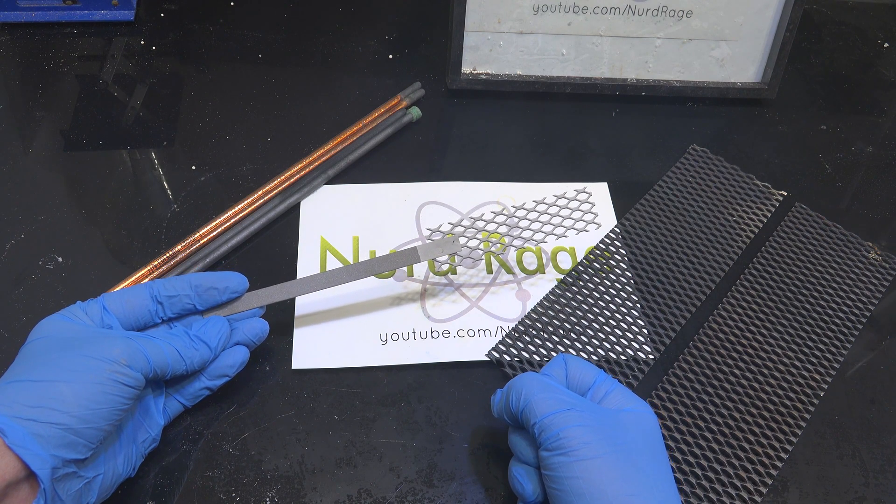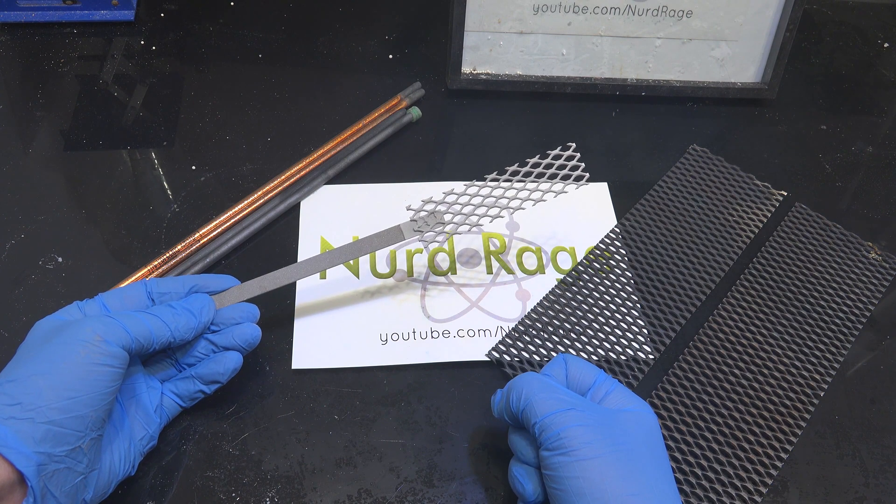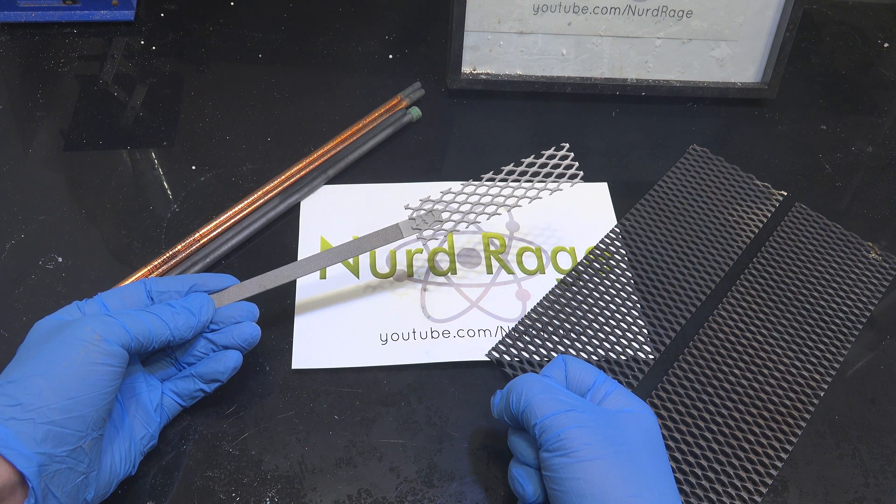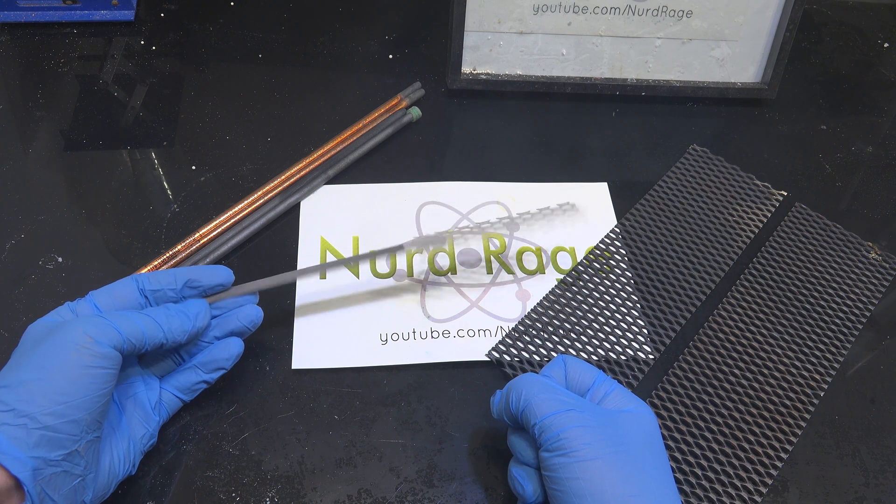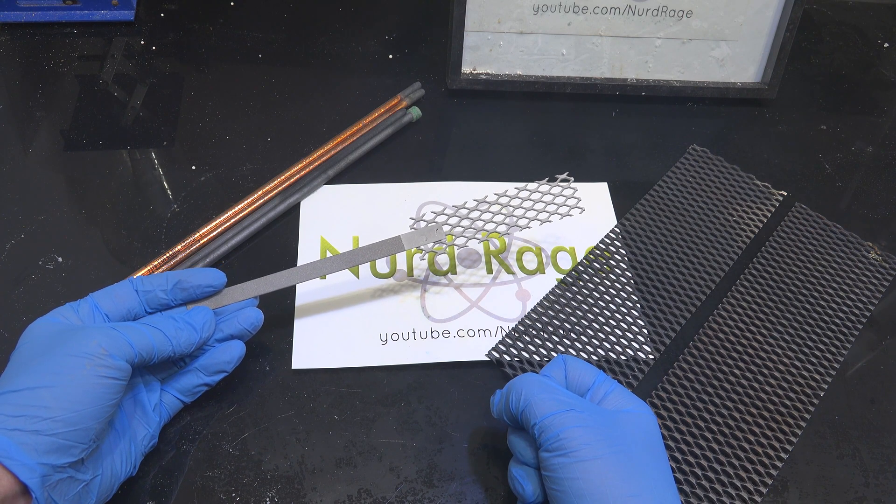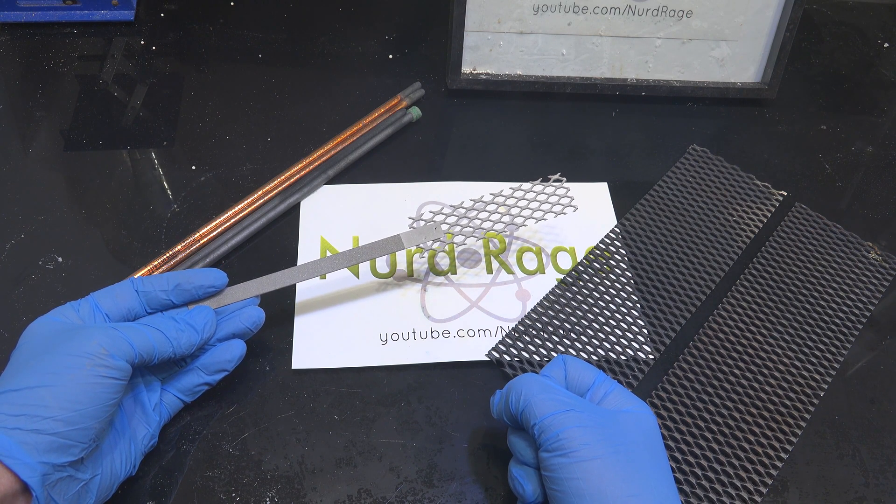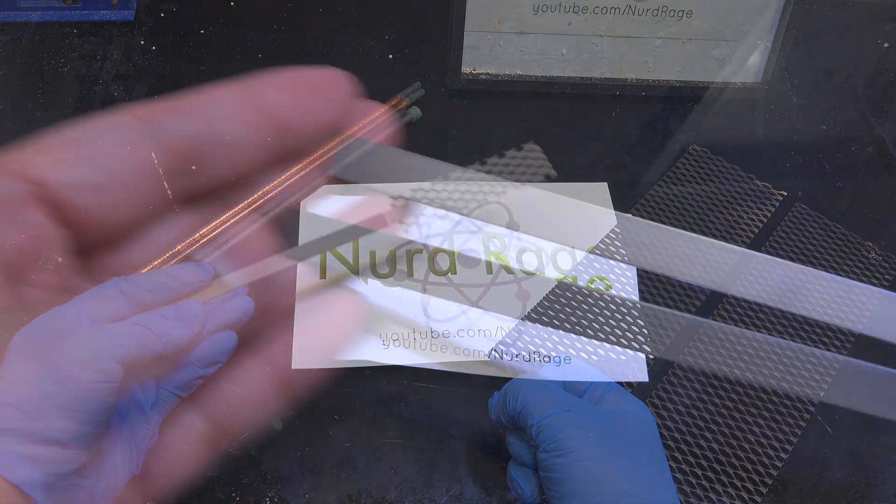Electrodeposition of platinum on titanium is a complicated process requiring a lot of preparation of the titanium, special platinum salts and electroplating conditions. I'm not going to do that. I'm just going to attach platinum on titanium directly.